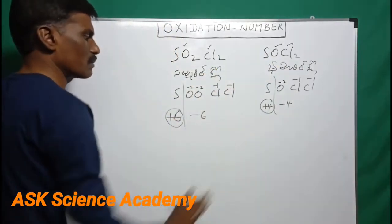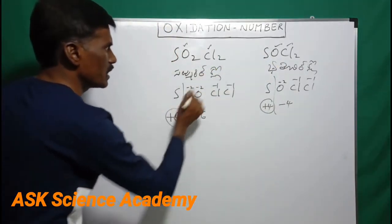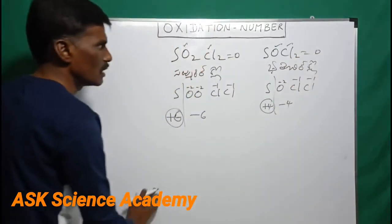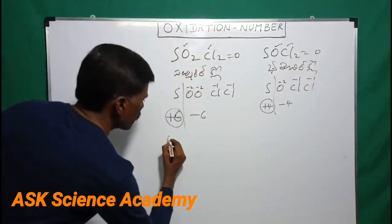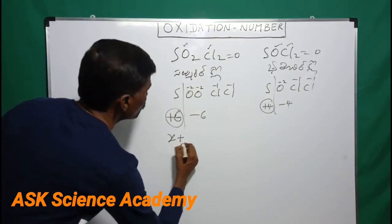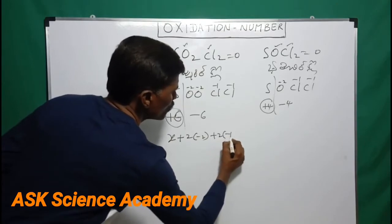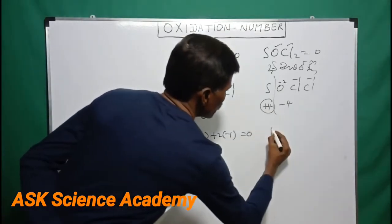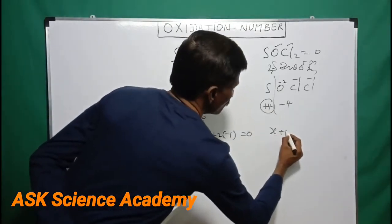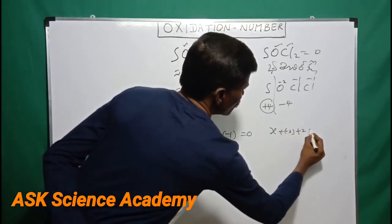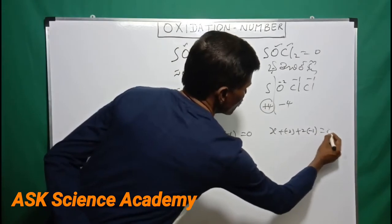The formula is made by the method, the molecule is 0. The molecule is made by sulfur. x plus 2 into minus 2 plus 2 into minus 1 equal to 0. x plus minus 2 and plus 2 into minus 1 equal to 0.